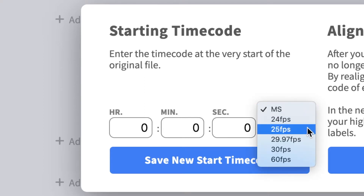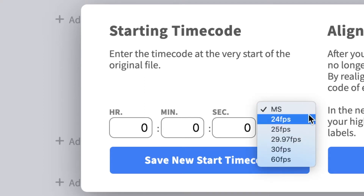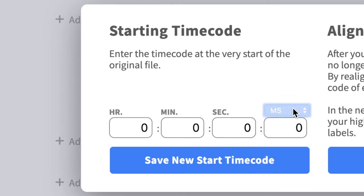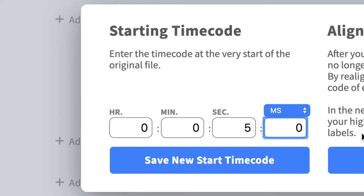On HappyScribe, you also have the option to change it to frames per second. For this particular case, I will keep it at milliseconds. For this project, I need to change the starting timecode to 5 seconds, 510 milliseconds.